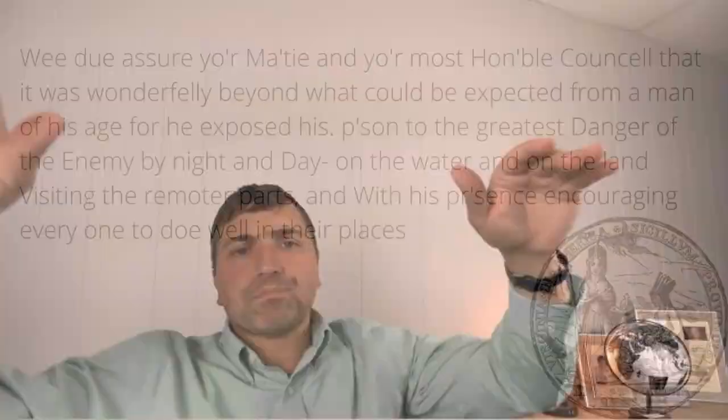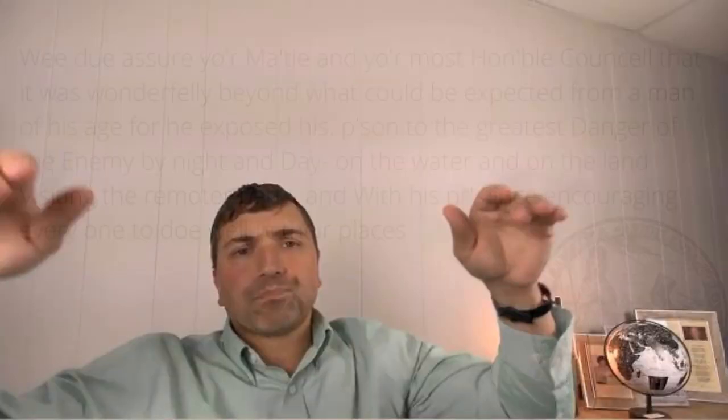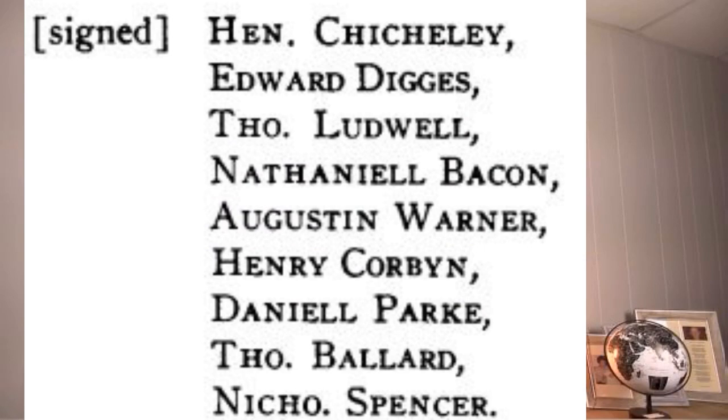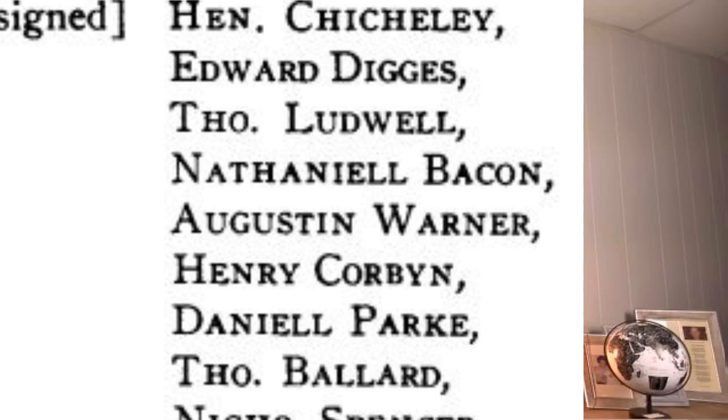So Berkeley is being a hands-on governor doing what is best for the people, but the fact that he's going out and visiting remote places I think is a hint that there's some problems going on out in the frontier. At the time of this letter Berkeley is 68 years old. The council letter is signed by all of the counselors including Henry Chickley, Edward Diggs, Thomas Ludwell, and there's a new name on the council: Nathaniel Bacon, who is going to be a big part of the next several weeks of this podcast.